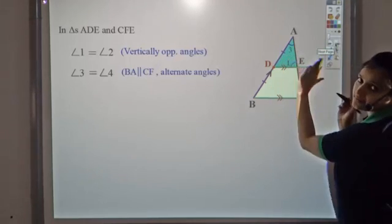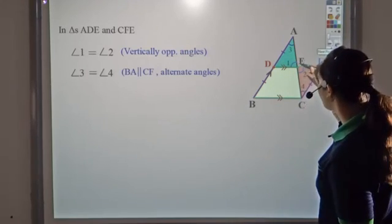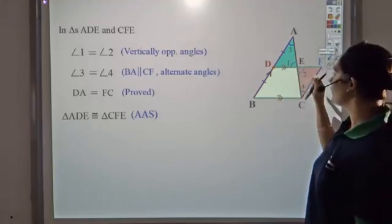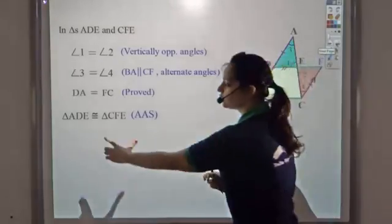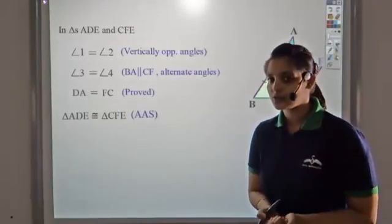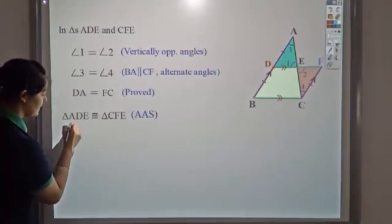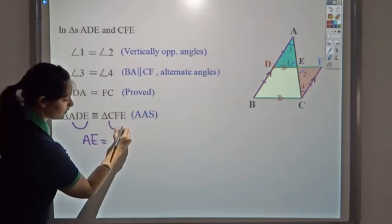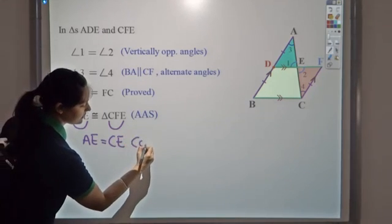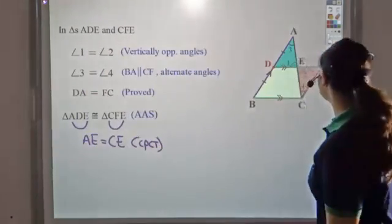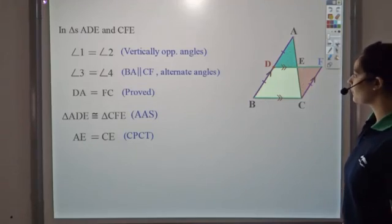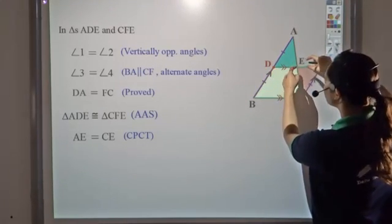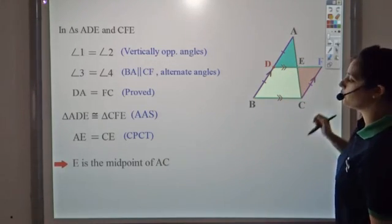Now I have two pairs of equal angles and I know that DA is equal to CF. Hence I can say the two triangles are congruent by Angle-Angle-Side (AAS). Since the two triangles are congruent, corresponding parts are also equal. Taking the corresponding parts, AE corresponds to CE — so by CPCT, AE is equal to EC. This is exactly what we wanted to prove: that DE bisects the third side AC, meaning AE equals EC and E is the midpoint of AC.